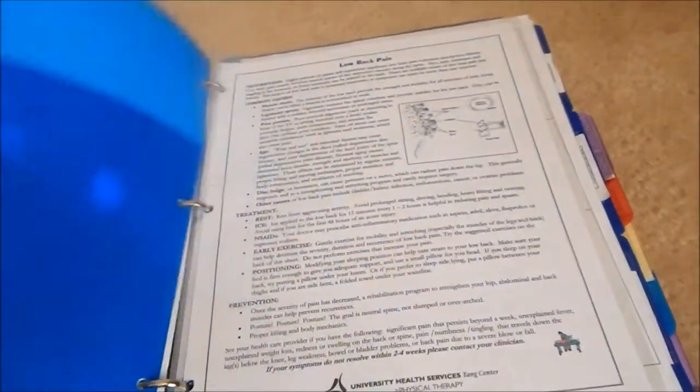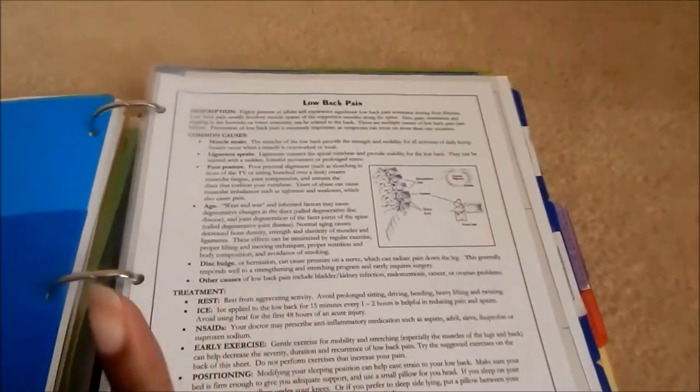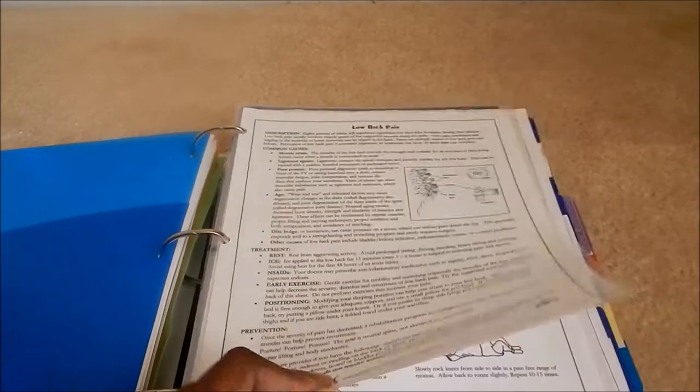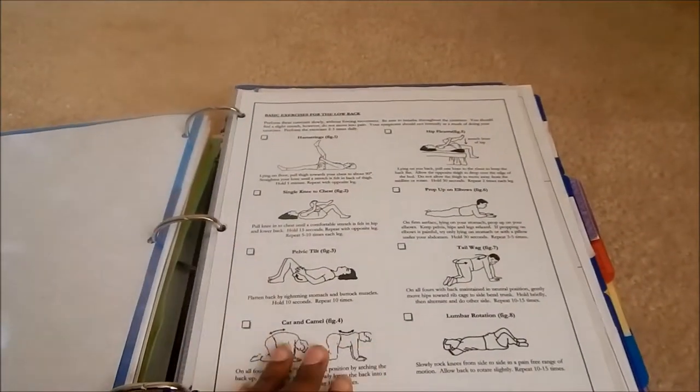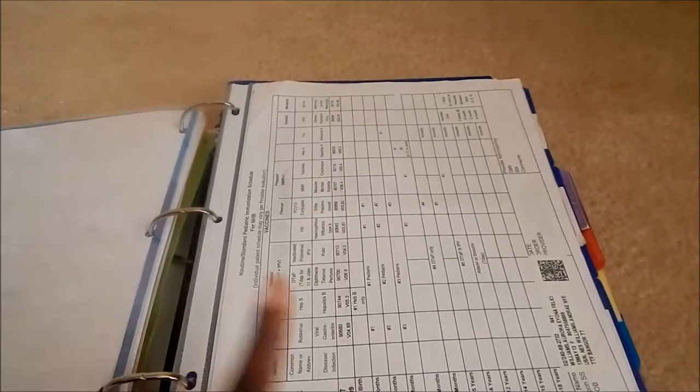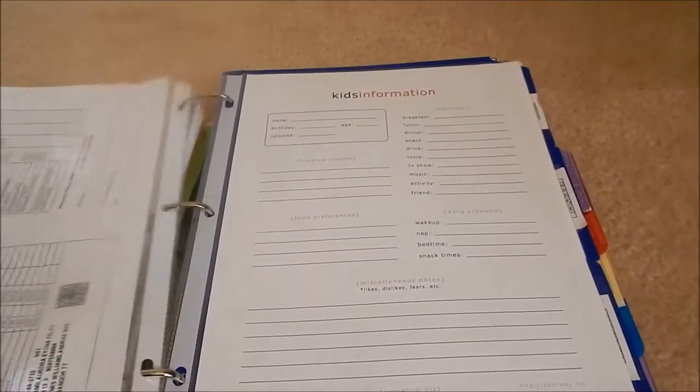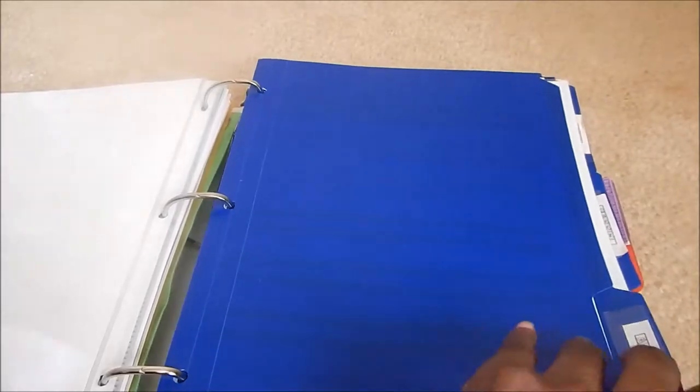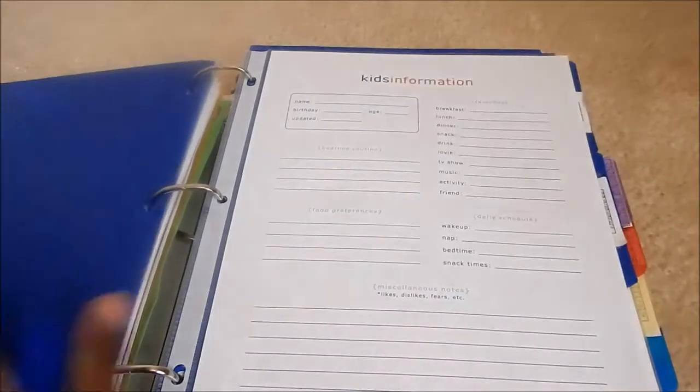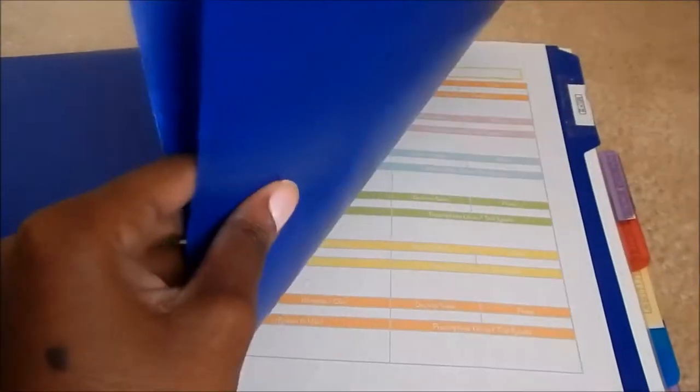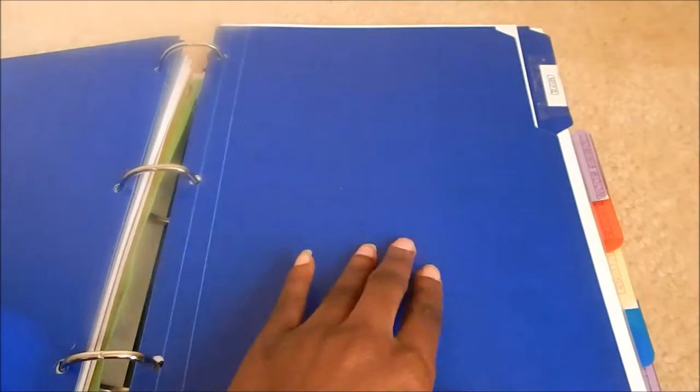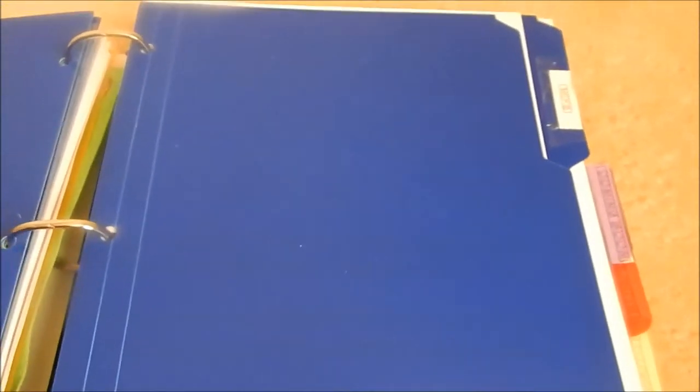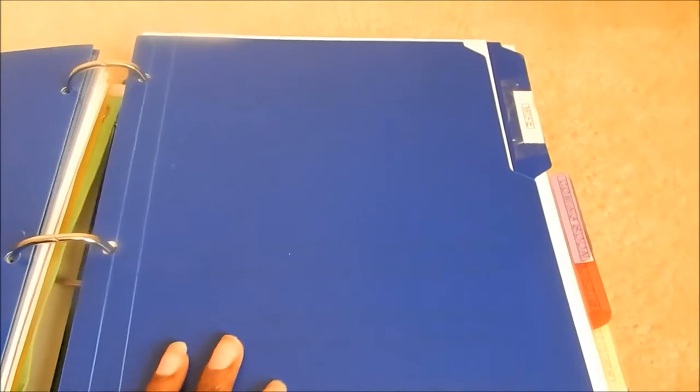Next tab is family. The first thing you'll see is my lower back pain guide with physical therapy exercises. Then there's a vaccines list and kids information, which is in front of Aurora's tab. In here are important medical records and stuff like that. I don't have anything medical for my husband because he's military.